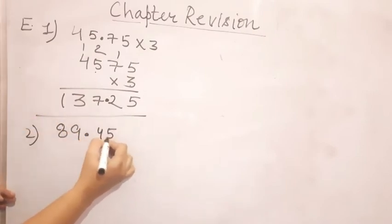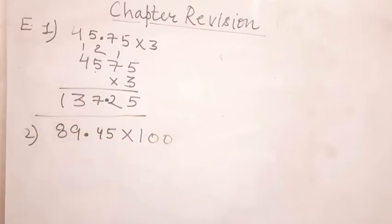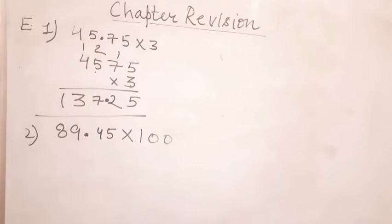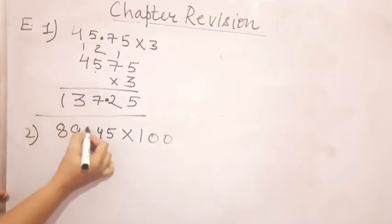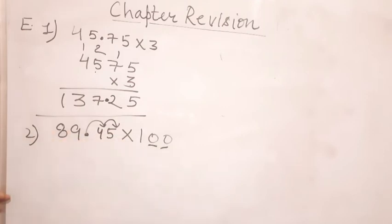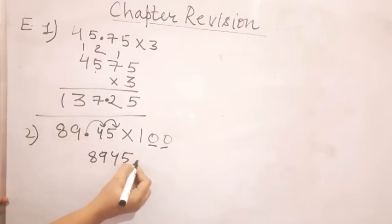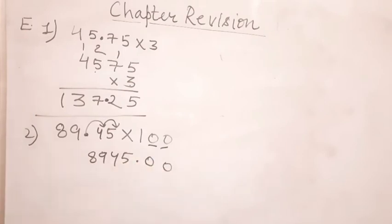Now let's move on to question number two: 89.45 multiplied by 100. I have already explained how to multiply decimal numbers by 10 or multiples of 10. It's your task to comment down in the comment section — what is the answer, and in which direction will the decimal point be shifted: right or left? The decimal point will be shifted in the right direction, and this number contains two zeros so the decimal point will shift by two places. That gives 8945.00, so the final answer is 8945.